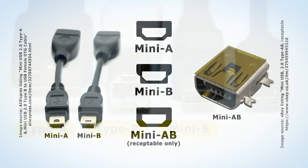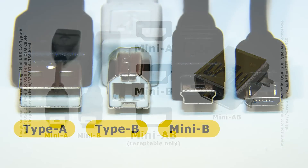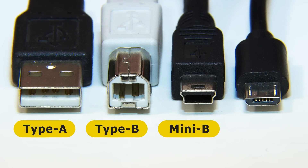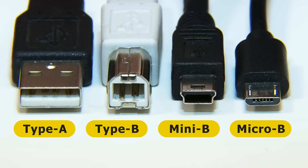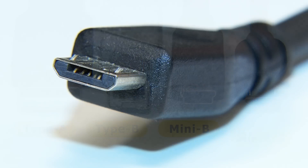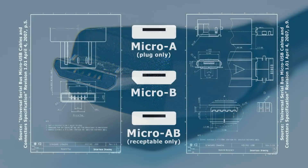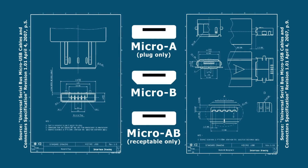By 2007, even Mini connectors were deemed too large, which resulted in the specification of Micro B. This became very popular and is still featured on some new hardware. Micro A connectors along with a Micro AB receptacle were also specified, although like Mini A and Mini AB these are now rare, and I couldn't find any real examples to include in this video.